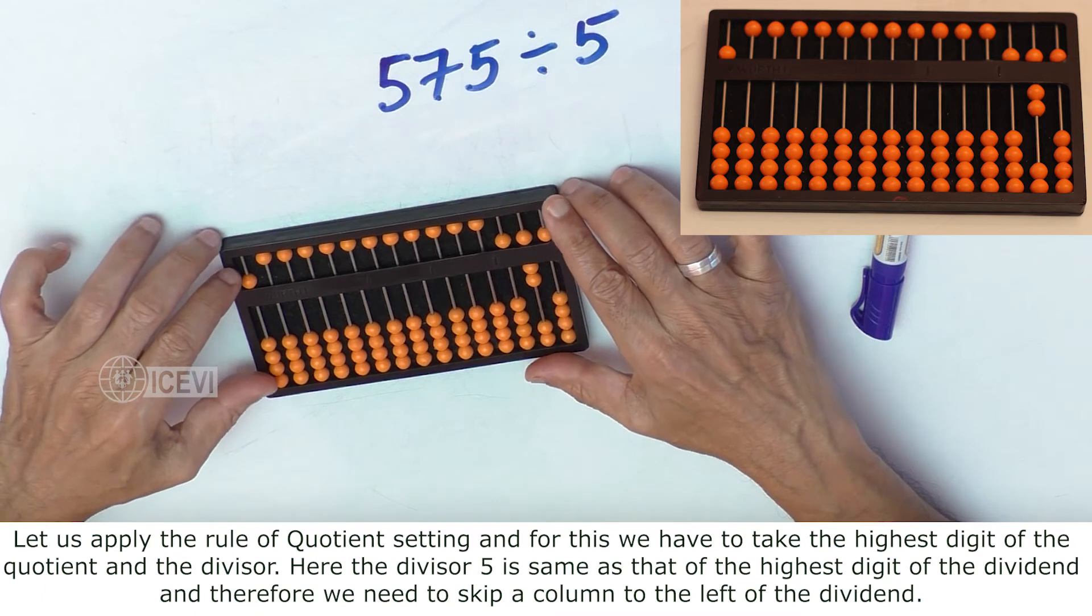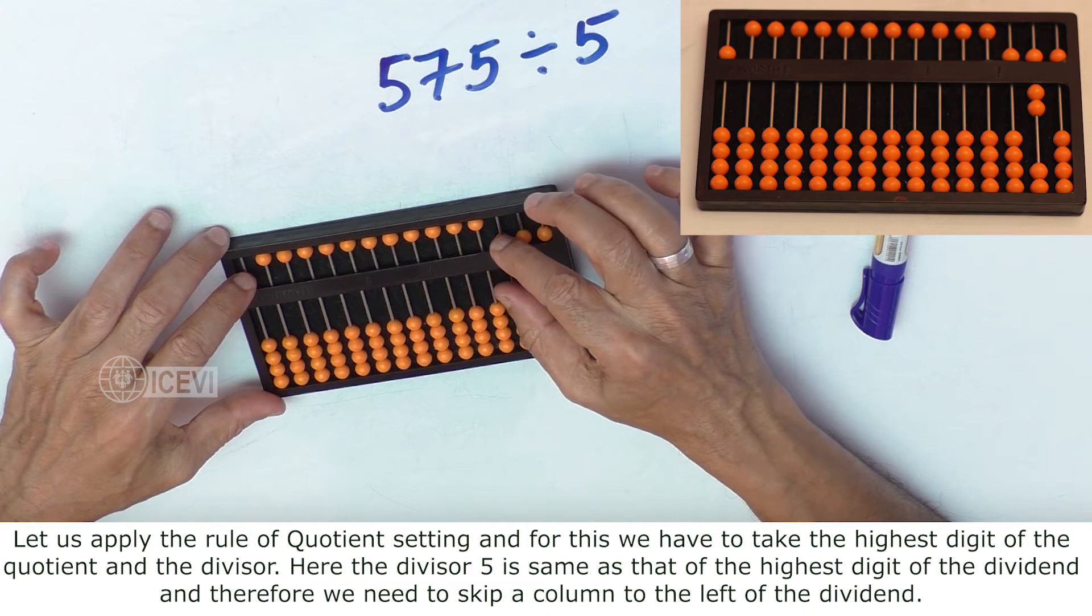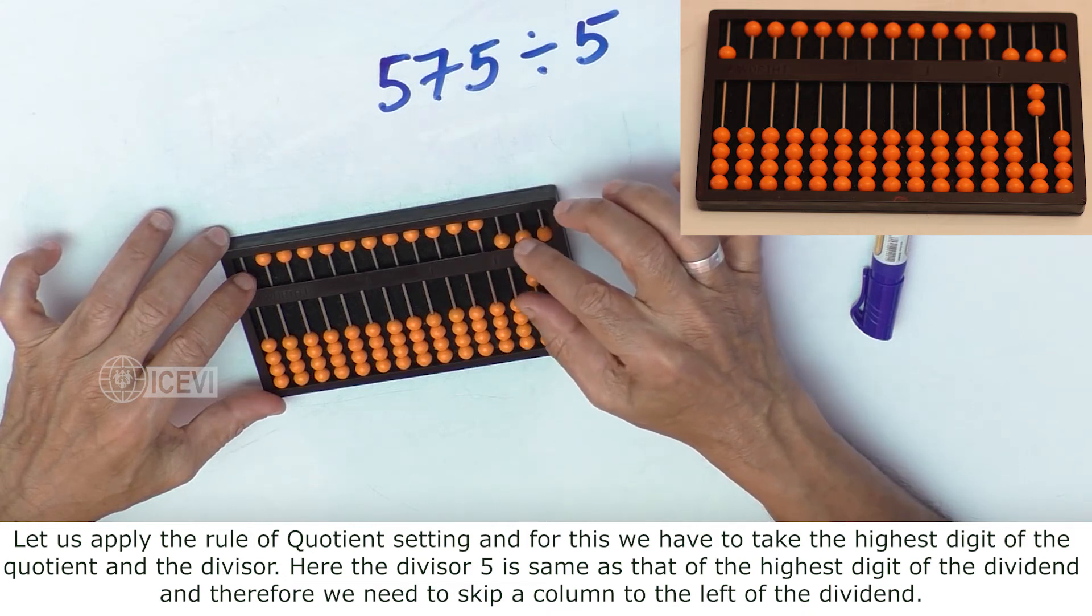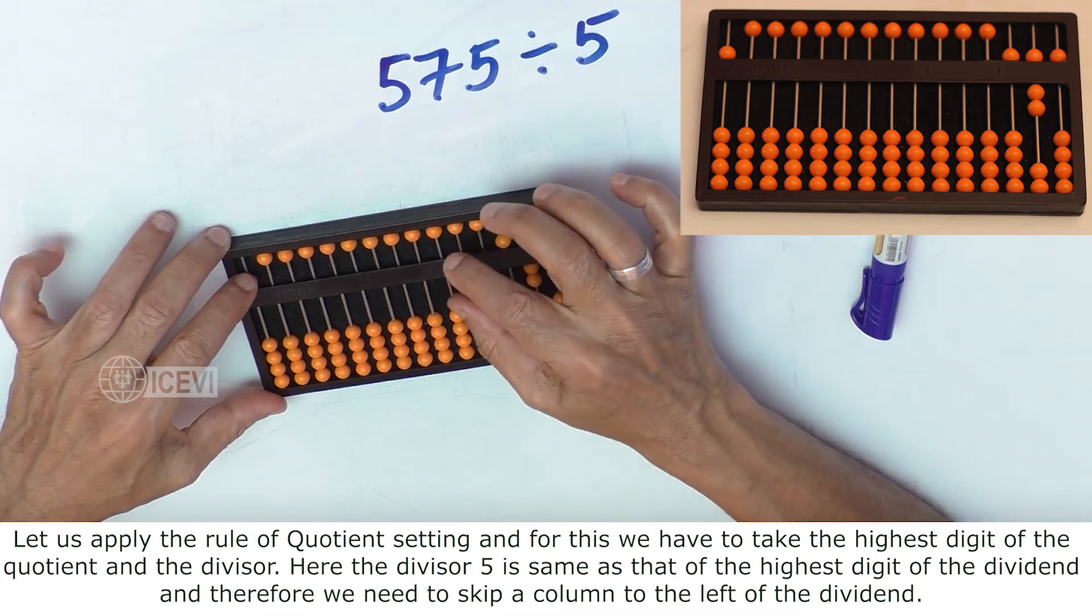Here, the divisor is 5 which is same as that of the highest digit of the dividend. And therefore, we need to skip a column to the left of the dividend in setting the quotient.